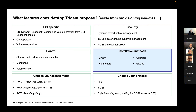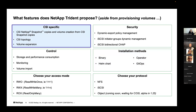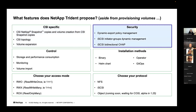We have a Helm chart on artifacthub.io and an operator on operatorhub.io for OpenShift users. In terms of CSI-specific features, we support CSI snapshots, CSI topology, and volume expansion. Trident is secured at multiple layers — for network accesses and iSCSI, limiting exactly who can mount resources.